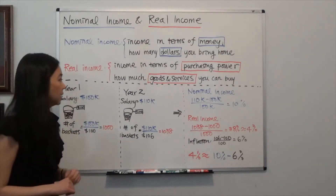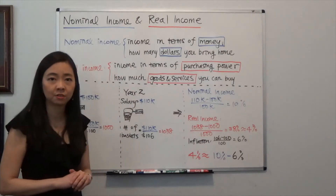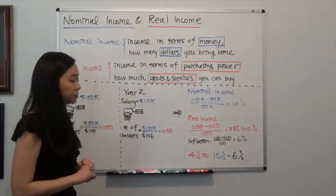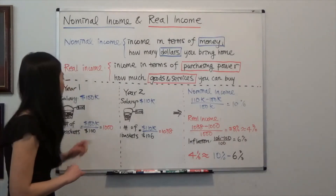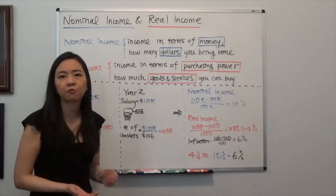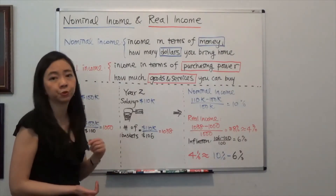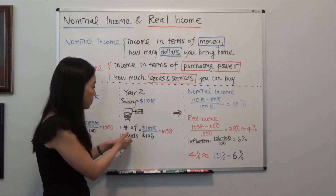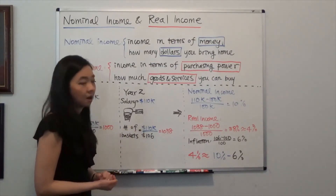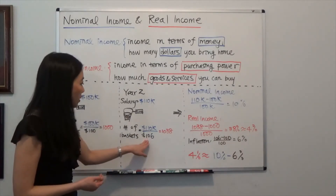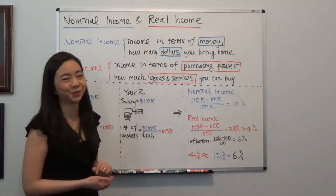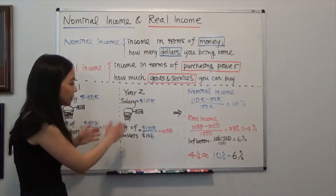Now in year 2, suppose you have a salary increase. Your salary is now $110,000, and at the same time the price of the basket has also increased from $100 to $106. Now you will ask yourself, how many baskets can I afford to buy? The number of baskets you can afford to buy in year 2 will be $110,000 divided by $106, which gives you 1,038 baskets.